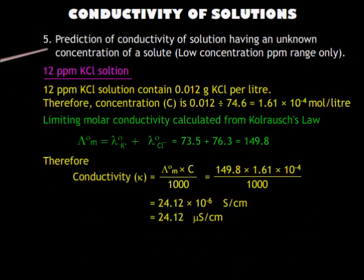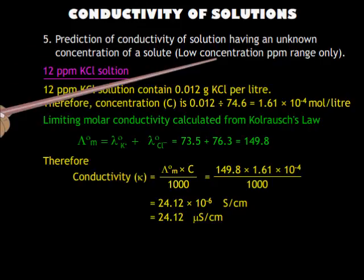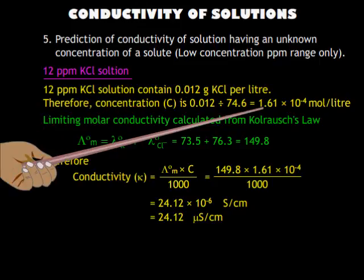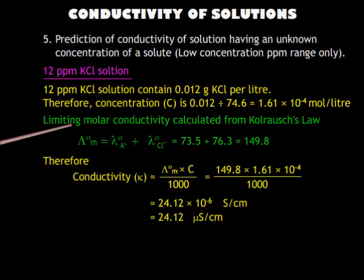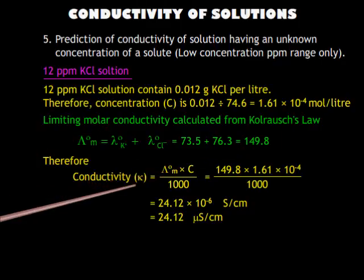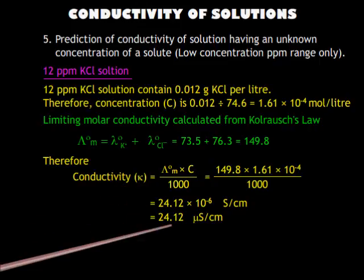Application 5: Prediction of conductivity of unknown concentration of a solute, for low concentrations only. For example, to predict the conductivity of a 12 ppm solution of KCl: 12 ppm means 0.012 grams of KCl in 1000 ml, which equals 1.61 × 10⁻⁴ moles per liter. The limiting molar conductivity calculated from Kohlrausch's law is 149.8. Therefore, conductivity is calculated from the formula and found to be 24.12 mS per cm, which is almost equal to the measured quantity.